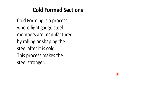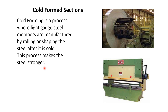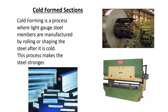Cold-formed sections: cold forming is a process where light-gauge steel members are manufactured by rolling or shaping the steel after it is cold. This process makes the steel stronger. A roller of steel is passed into a hydraulic press brake machine, and after pressing, different types of sections are made. These are not hot-rolled sections — cold-formed means the steel is at normal temperature when passed into the machine, then pressed to form new sections, which are very light-gauge steel.